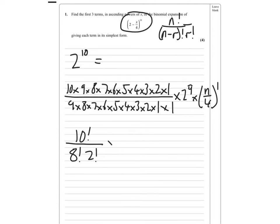So for the next term, n minus r is 10 minus 4 and r is 4, times 2 to the power of 9, times (x over 4) to the power 2. Remember, the powers add up to make 10 all the time.